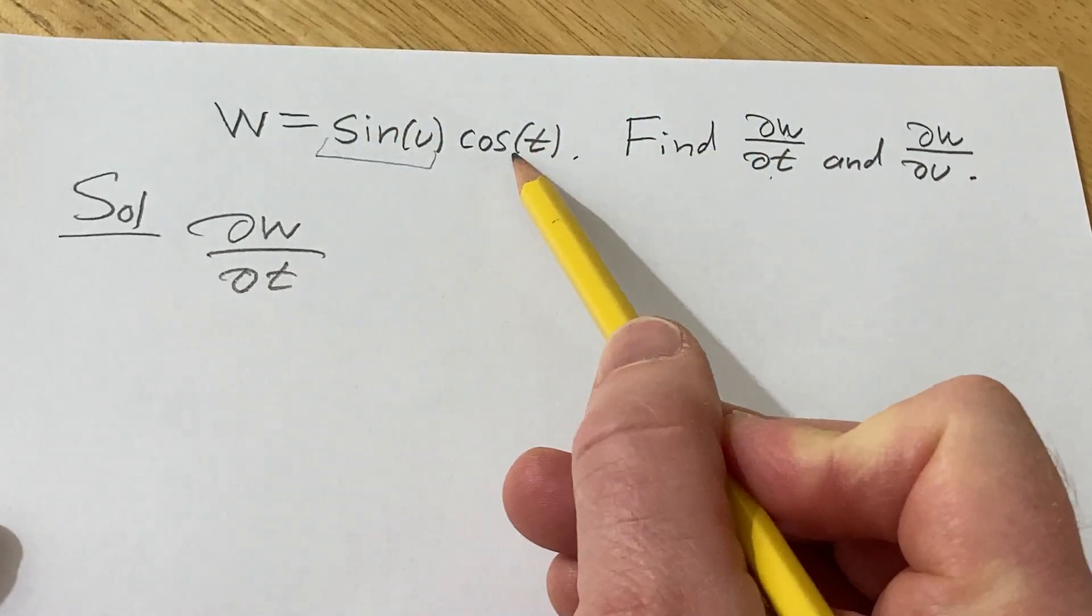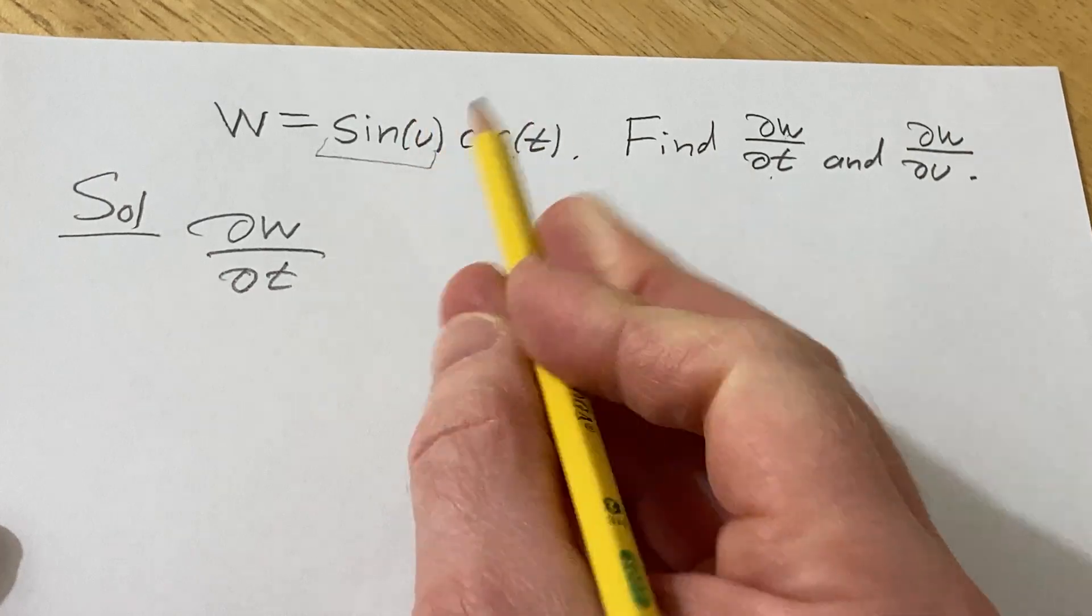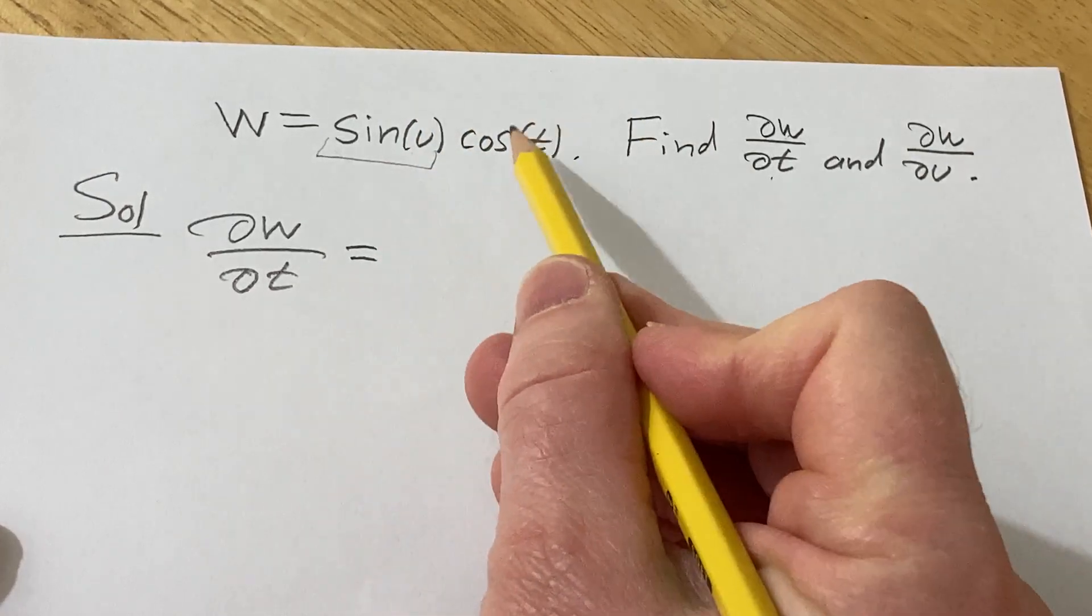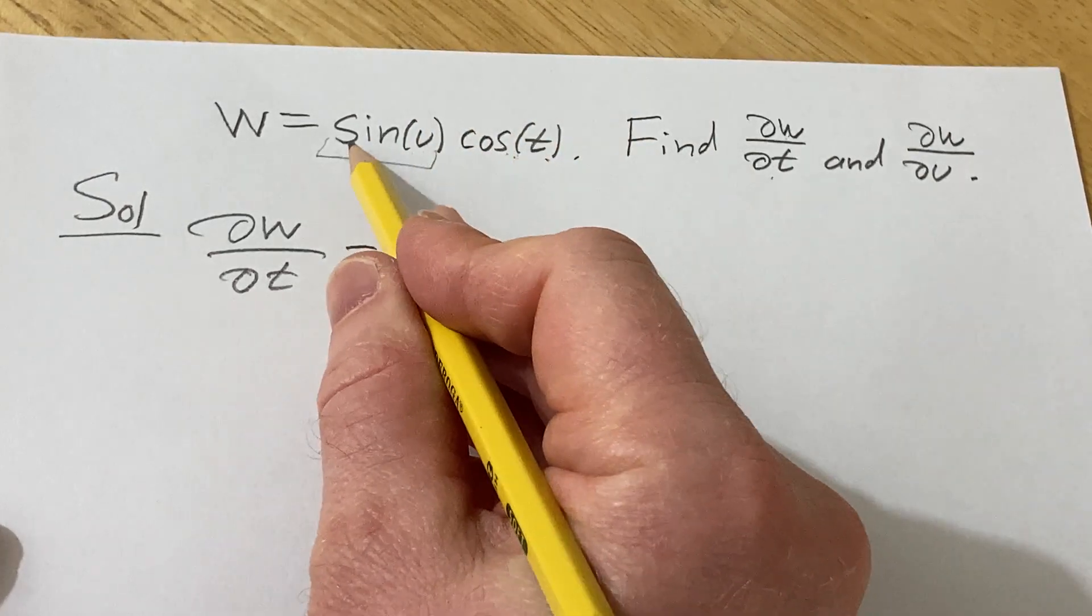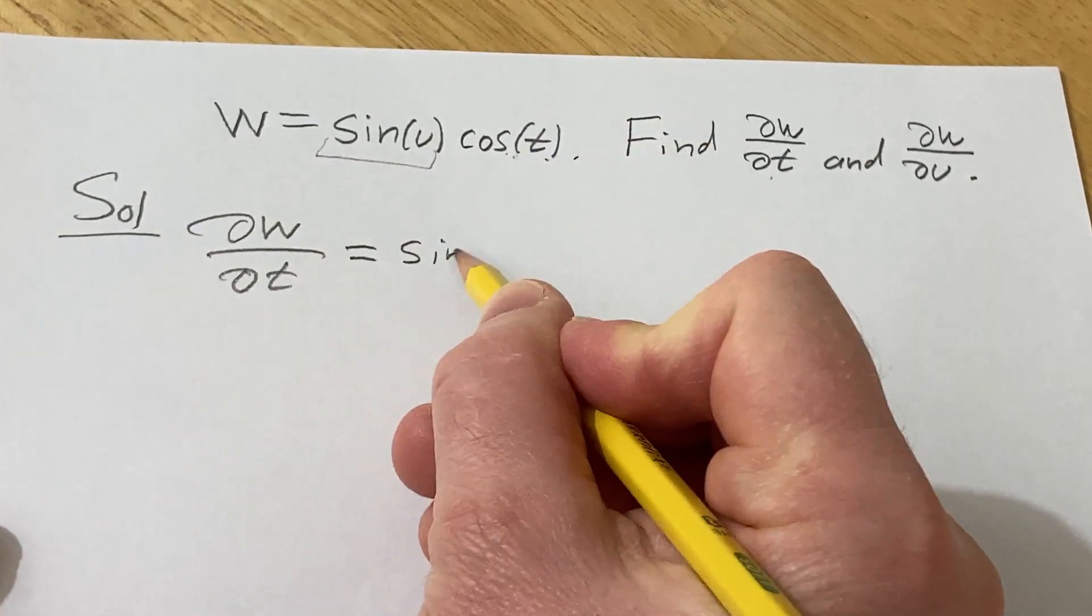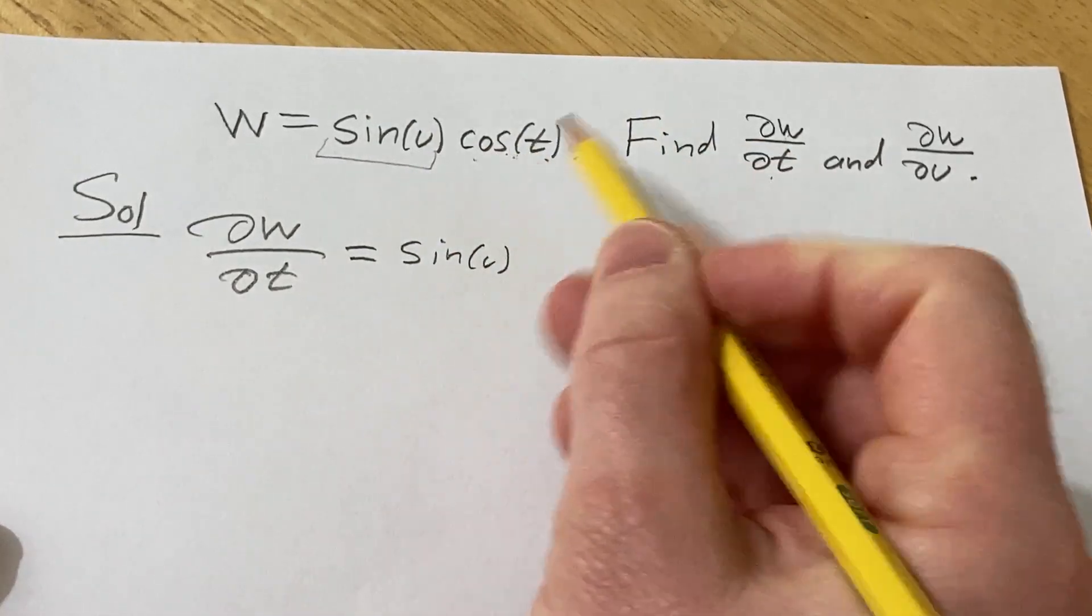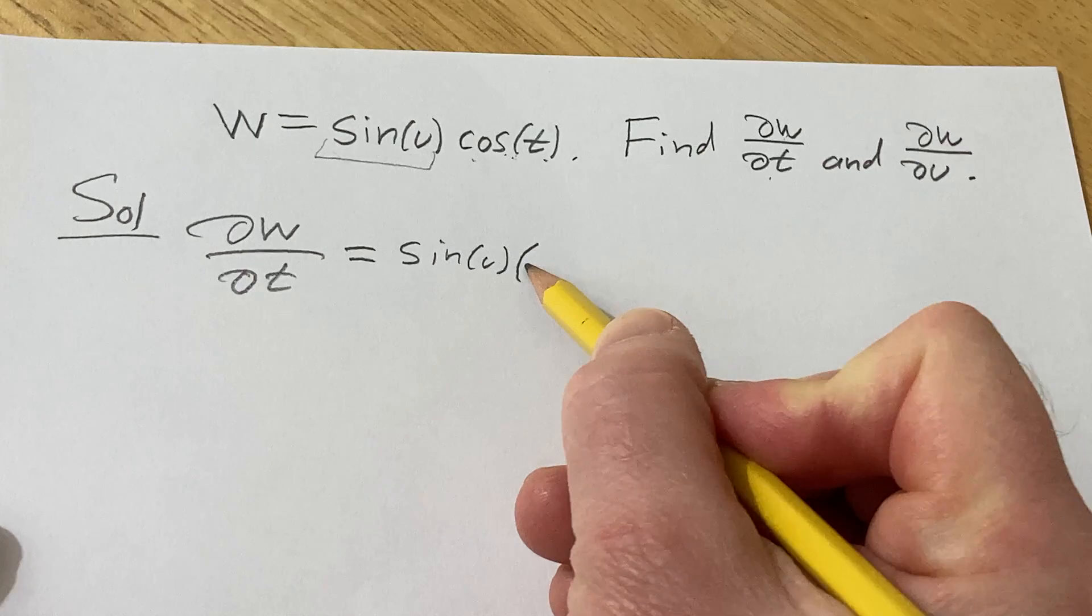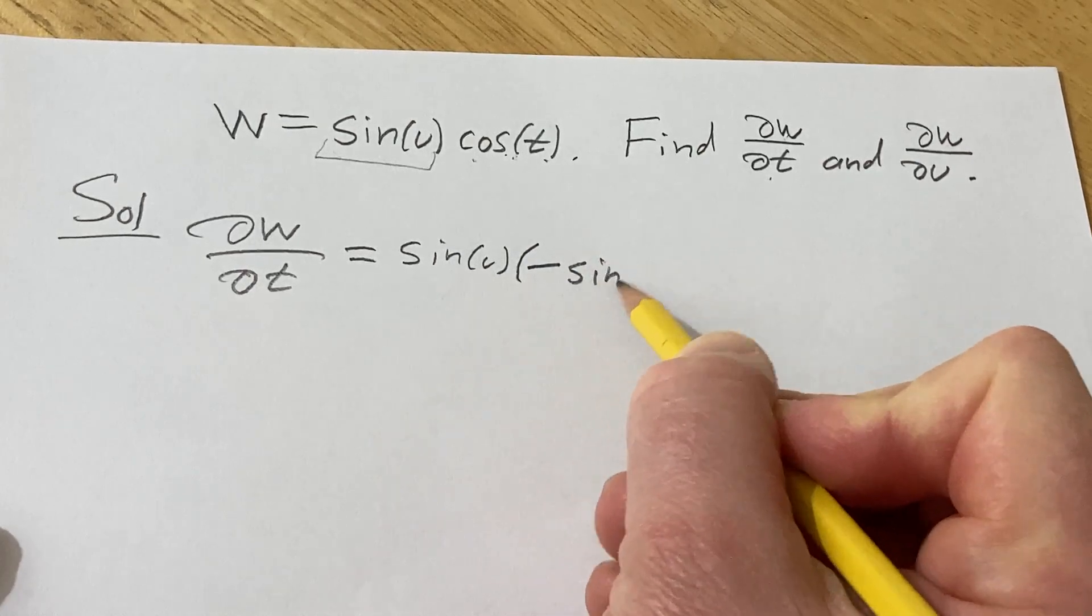We're basically just differentiating the cosine of t, and this piece just hangs out. The derivative of cosine is negative sine, so I'm just going to put, well, let's just say it hangs out, let's do it in steps, and then the derivative of cosine is negative sine, so parentheses, negative sine t.